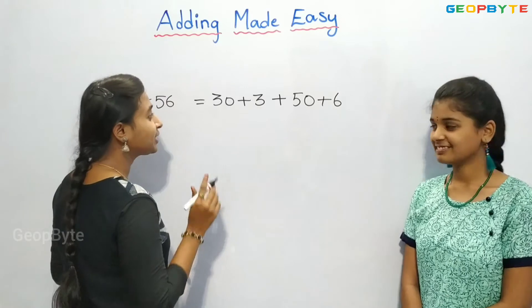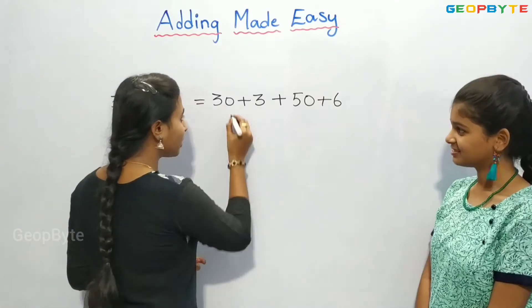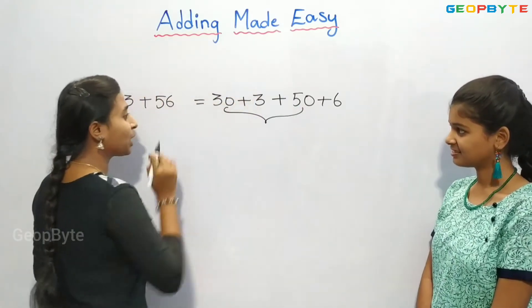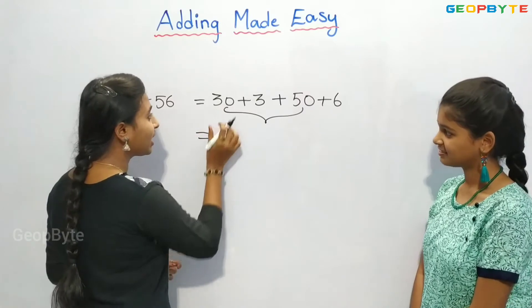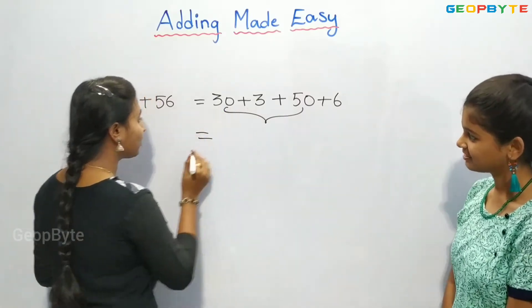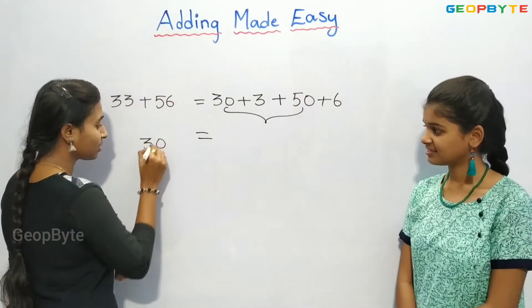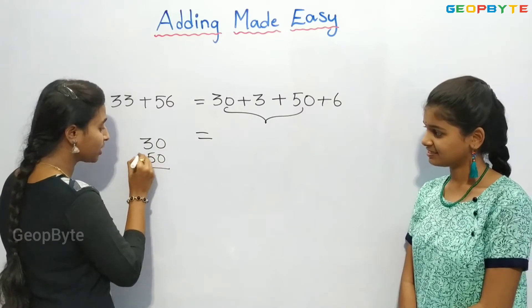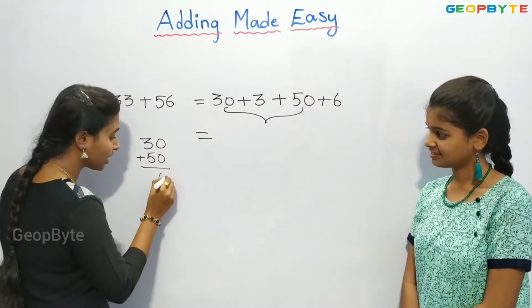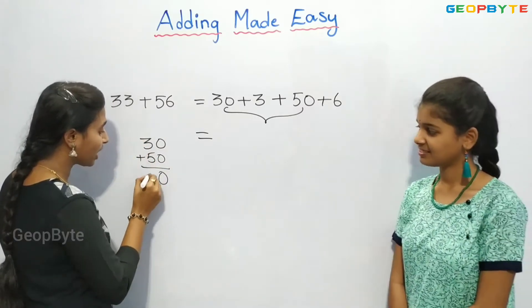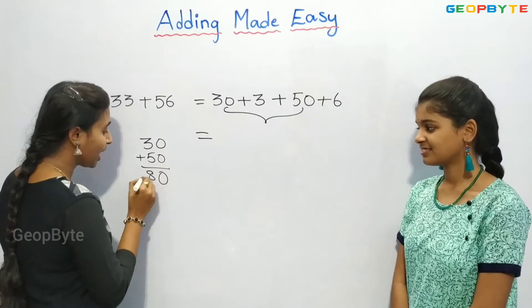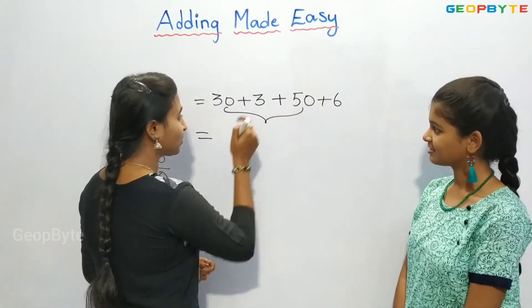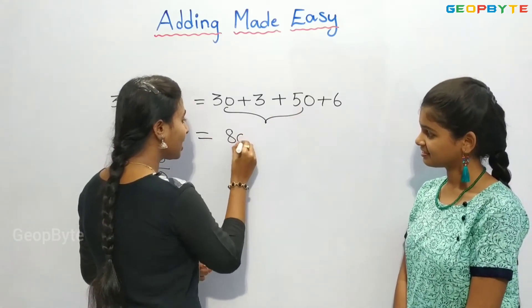First, let us add the tens — that is these two numbers. We will get 30 plus 50. 0 plus 0 is 0, and 3 plus 5 is 8, so we get 30 plus 50 as 80.